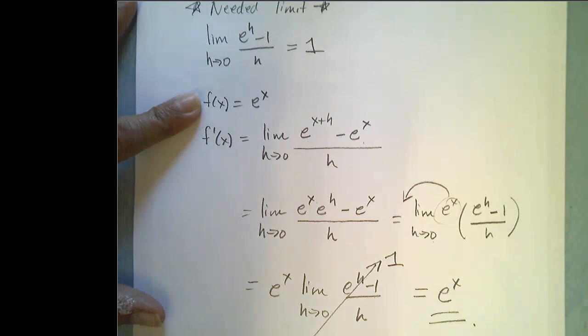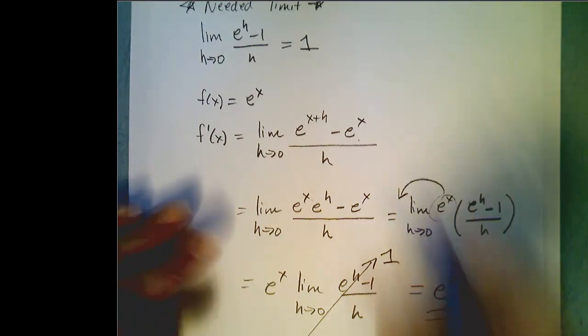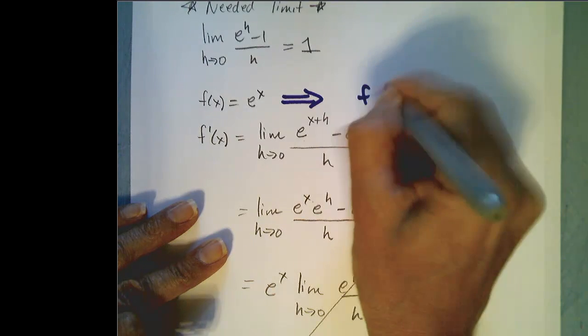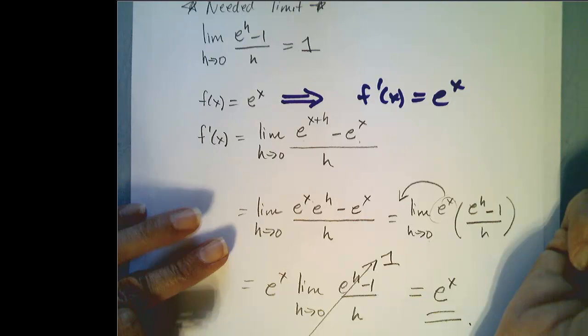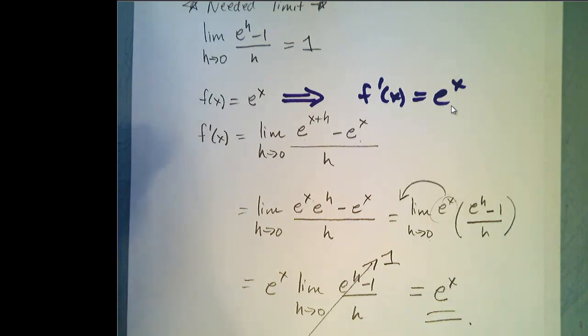And that is very cool. What we've just shown is that f of x equals e to the x, its derivative is itself. And that is very cool. It is the only exponential function such that it's its own derivative.